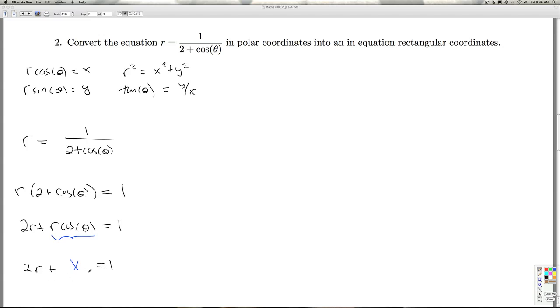So I've got 2r plus x equals 1. I'm going to move that x over, and I've got an r. r squared is x squared plus y squared, so r is plus or minus the square root of x squared plus y squared, so I can put that in there.